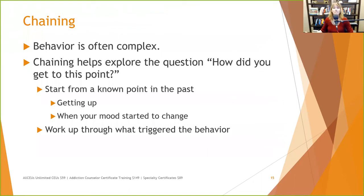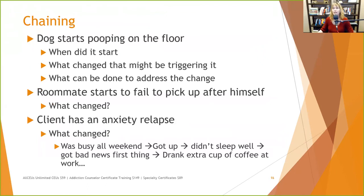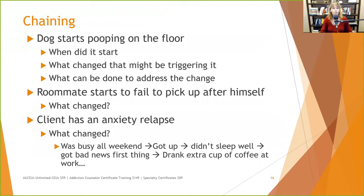A lot of times it's working with cognitive behavioral things and distress tolerance interventions to help people deal with whatever triggered their unpleasant mood. Chaining example: your dog starts pooping on the floor — Brewster did this recently. When did it start? We'd had him for a year and a half, and all of a sudden he started doing it every night. What changed that might be triggering it? He'd been going upstairs, not sleeping with me, and his buddy Duke had been sleeping with me. That was really the only change. I tried letting him sleep in my room and lo and behold, he didn't poop on the floor. After a couple A-B tests: if Duke sleeps in my room, Brewster's going to poop on the floor.